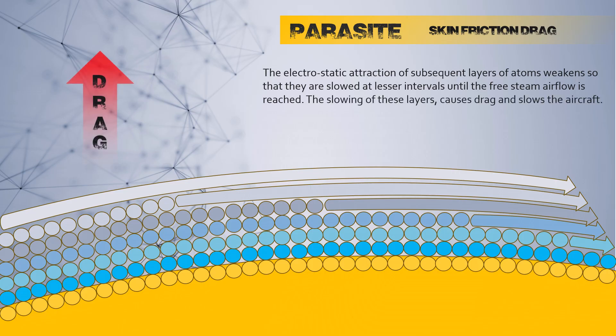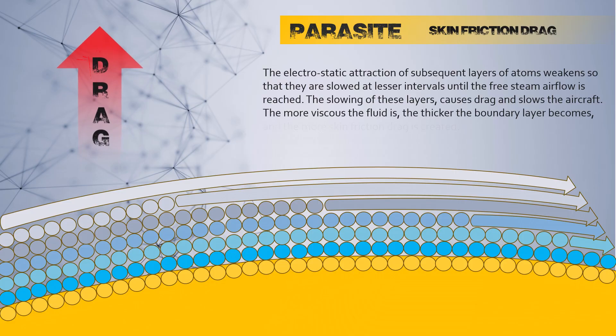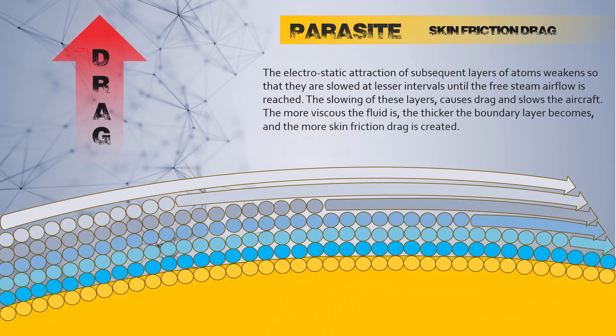The slowing of these layers causes drag and slows the aircraft. The more viscous the fluid is, the thicker the boundary layer becomes, and the more skin friction drag is created.